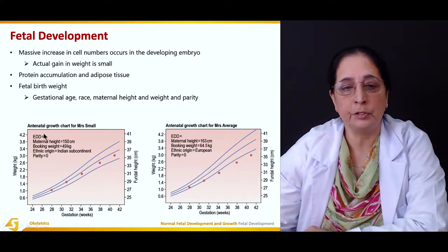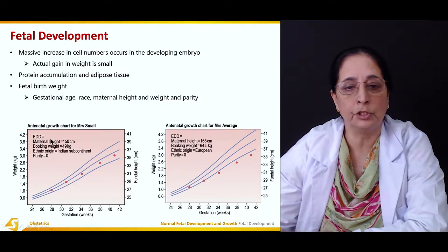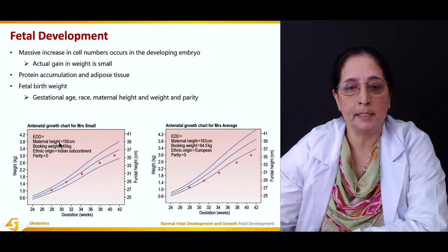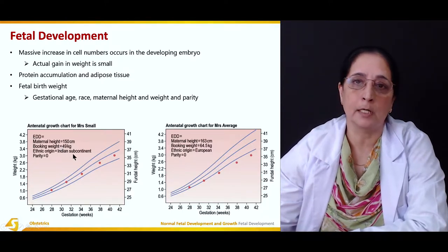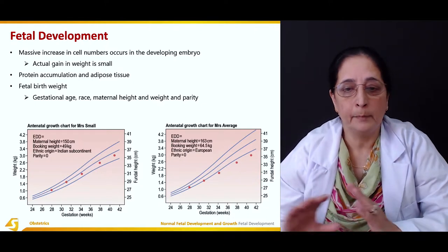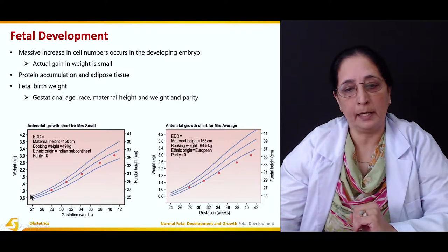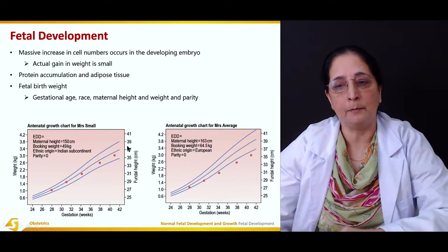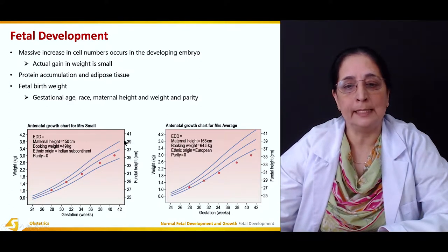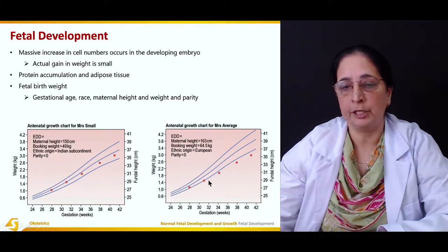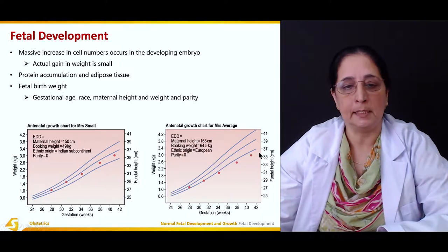These two graphs show the antenatal growth charts for small babies and average babies. The maternal height is 150 cm, weight 49 kg, ethnic origin Indian subcontinent, and parity zero (primigravida). You can see the difference — growth for smaller babies is more extensive early on, but by the time of delivery they tend to converge toward similar values in both charts.